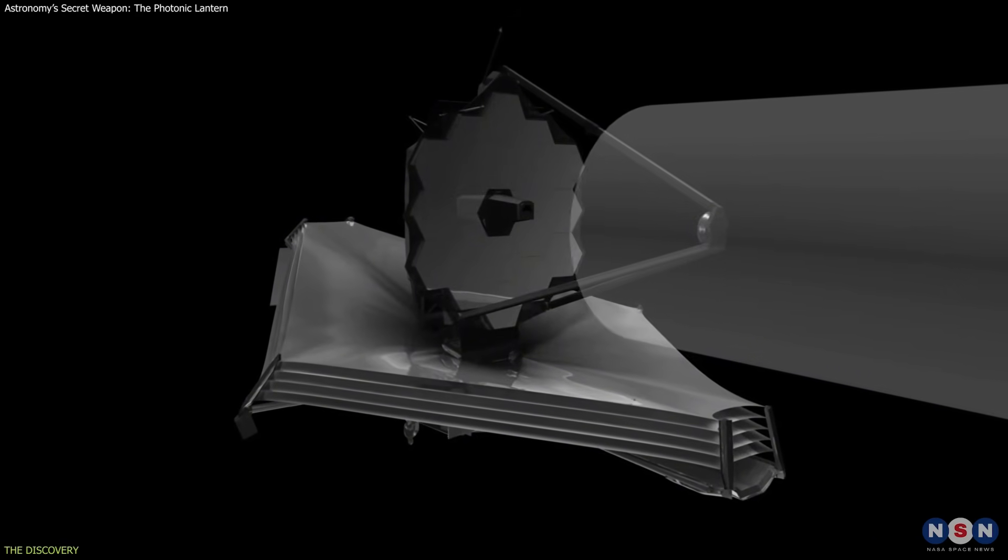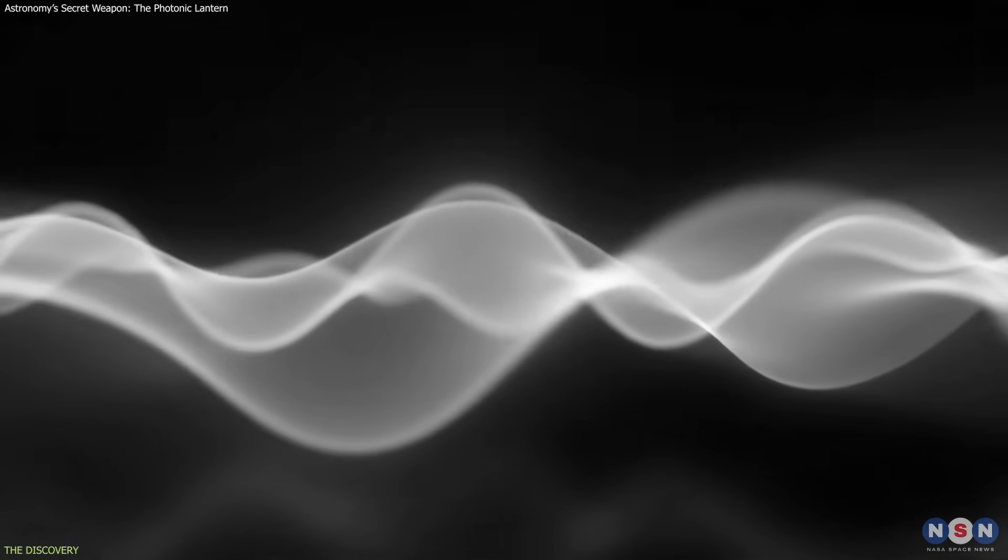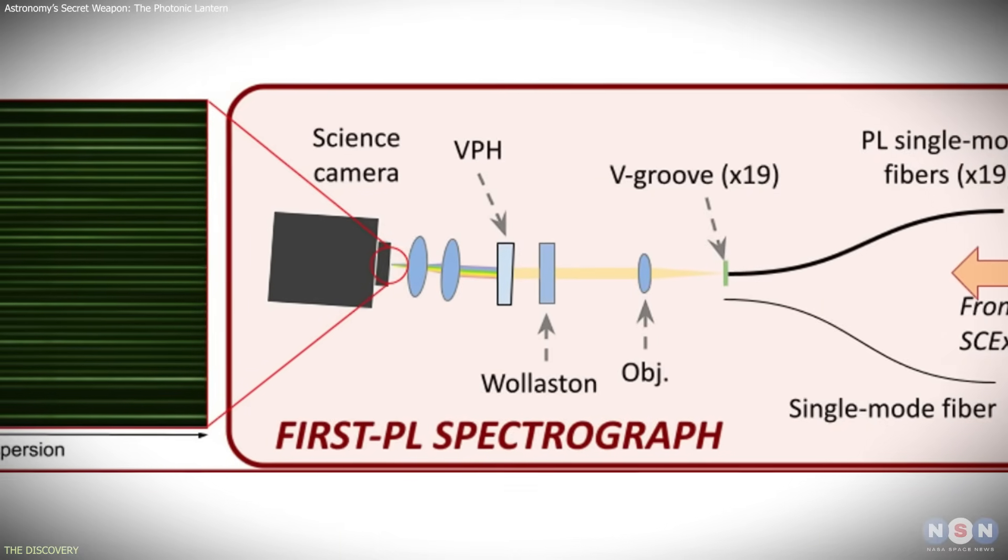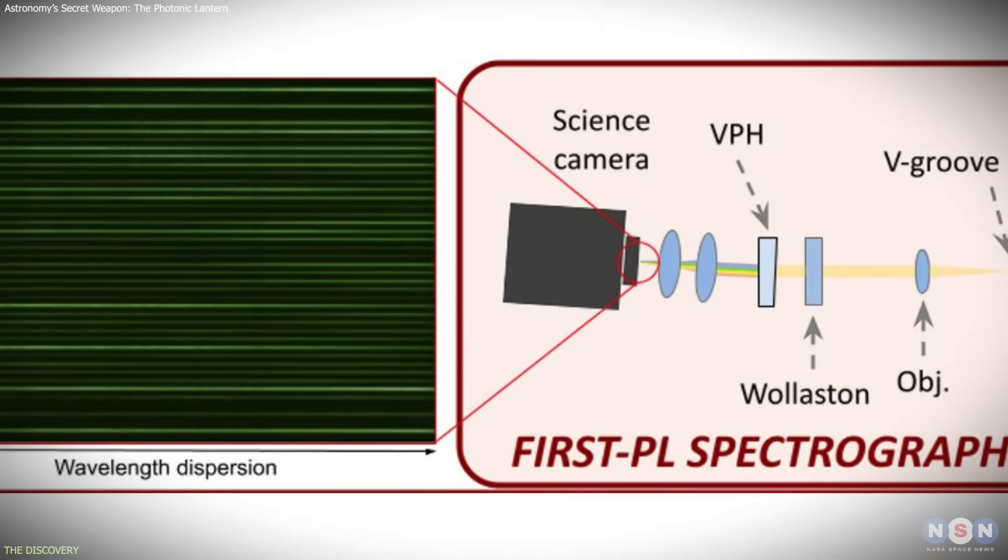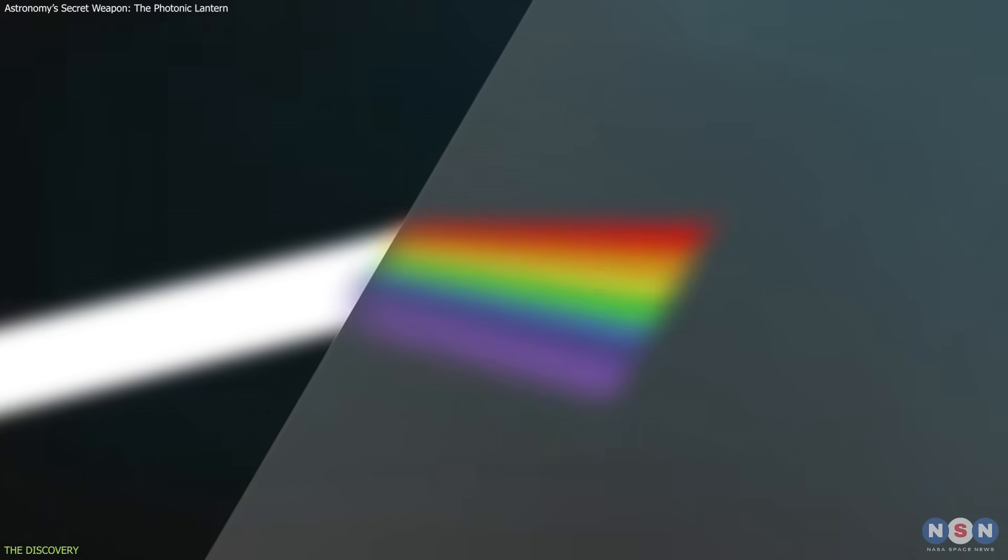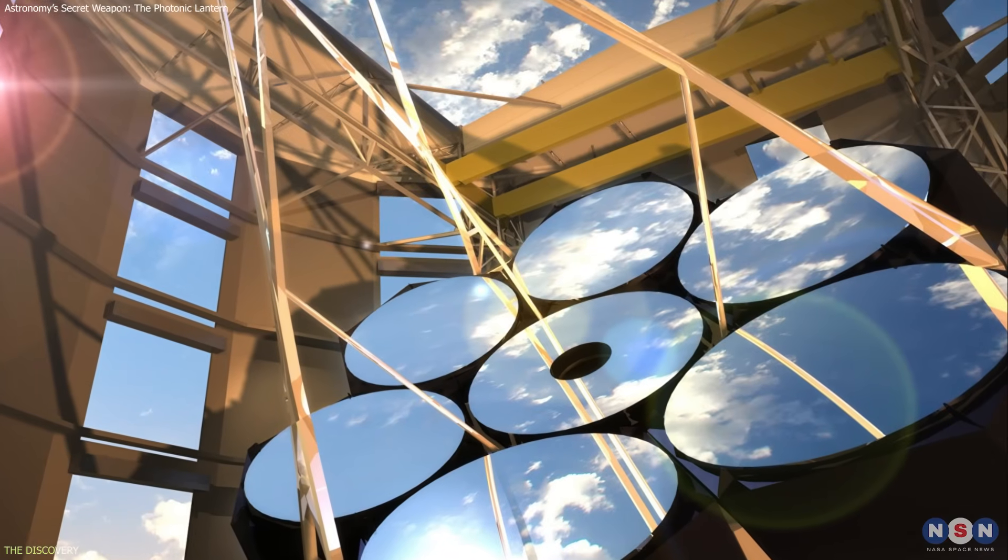Traditional telescopes treat light as a single, blended beam, discarding fine structural information in the wavefront. The photonic lantern separates that light into distinct spatial modes, preserving subtle details that are normally lost. These modes can then be analyzed to reconstruct sharper images than the telescope's aperture would typically allow.